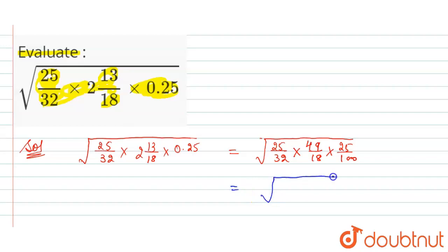In the next step we can write it as: under root of 25, which is the square of 5, 49 is the square of 7, and 25 is the square of 5.